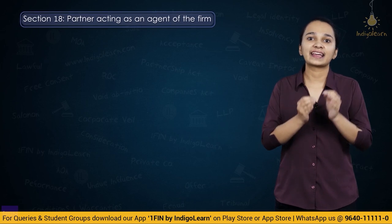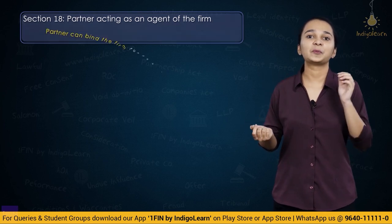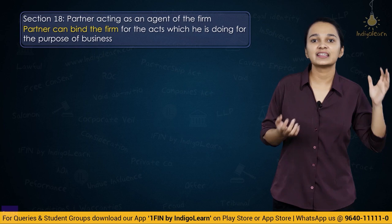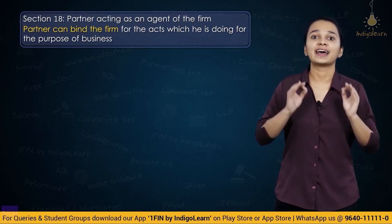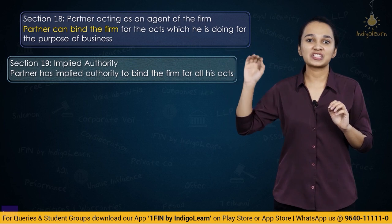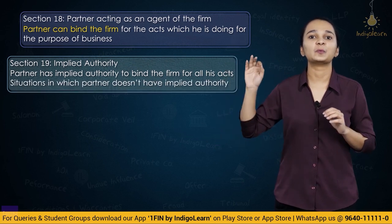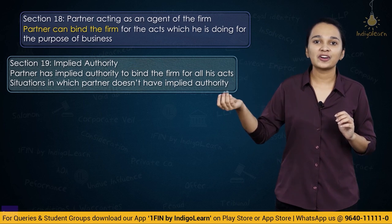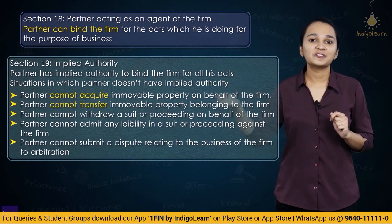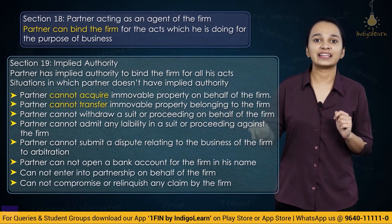Section 18 says a partner acts as an agent of the firm and can bind the firm with all acts done in the ordinary course of business. Section 19 talks about implied authority — a partner has implied authority to bind the firm with his acts. There are eight situations outside the implied authority of a partner: two related to immovable property, two related to proceedings, one arbitration, bank account, a new partnership on behalf of the firm, and compromising or relinquishing a claim made by the firm.